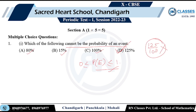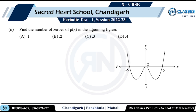Moving on to the next question: find the number of zeros of P(x) in the adjoining figure. He should say find the number of distinct zeros. Counting from the figure: 1, 2, 3. I'm solving under the assumption that it says distinct zeros, because in NCERT, zeros means distinct zeros. Your school might have a difference of opinion, but I will solve according to NCERT rules.